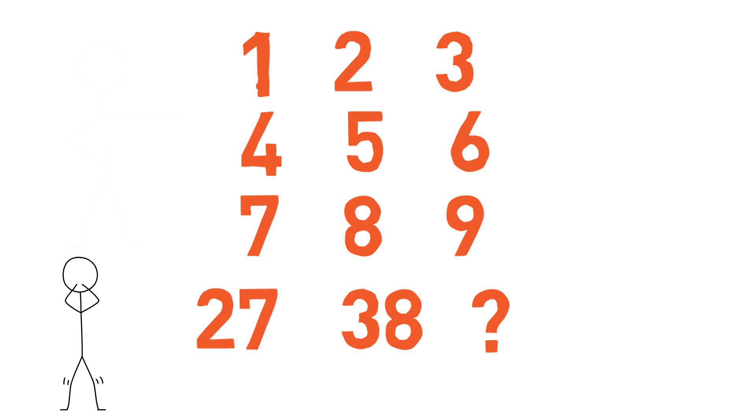So I will assume that the fourth number in each column is based on the first three numbers in the column. So let's look at the first column and see if we can find a pattern or formula.